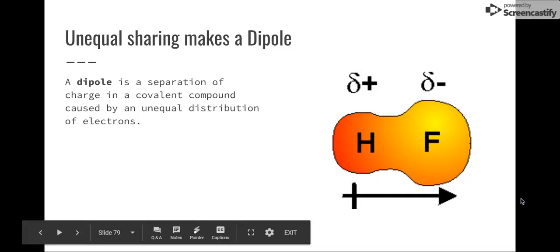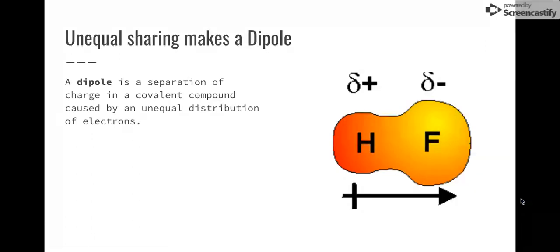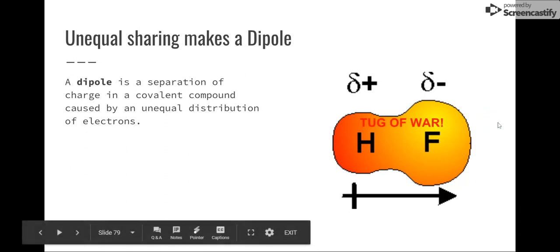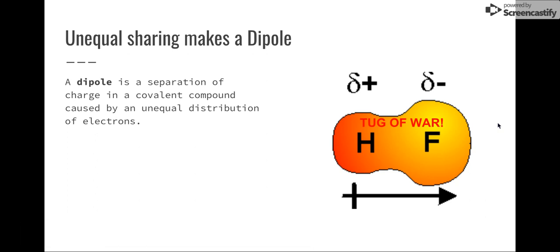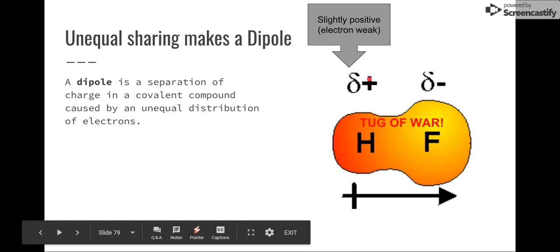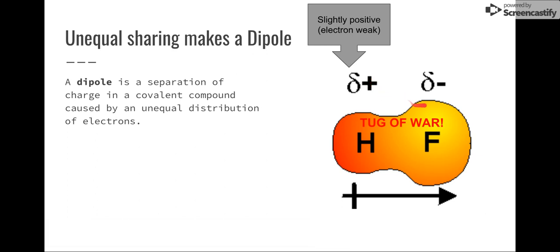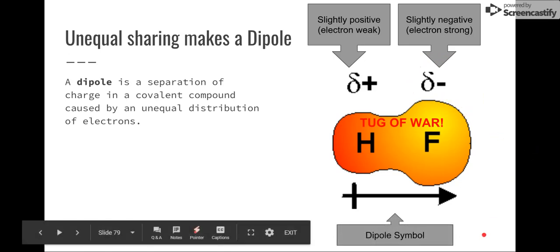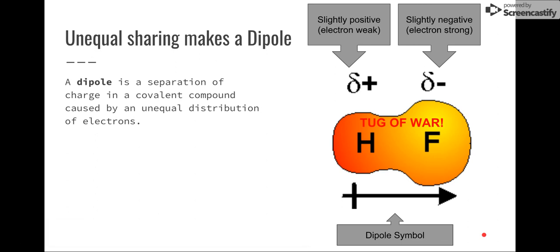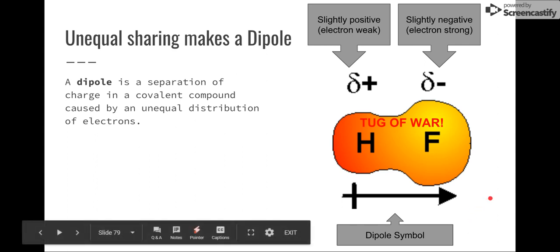Now when we have an unequal sharing of electrons, then this molecule will make something called a dipole. And a dipole, you need to know, is just a separation of charge in a covalent compound. So here we see a partial, this is kind of like a tug of war, where these two elements are pulling on those electrons. Now hydrogen is slightly electron weak, so it actually becomes slightly positive. Now if you look right here, this is a delta positive symbol, and that means slightly positive because it's electron weak. On the other hand, fluorine is electron strong, it's slightly negative. So we have a delta with a negative sign. Now down here on the bottom, we call this the dipole symbol. This just represents where the pole is on the electrons. It's being pulled to the right, so dipole. There's two different poles of this molecule.